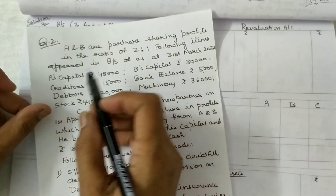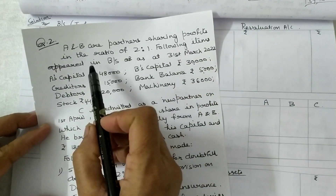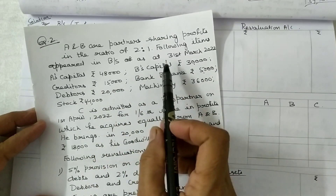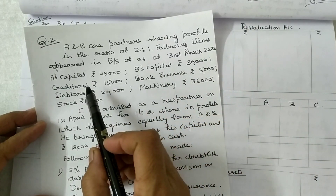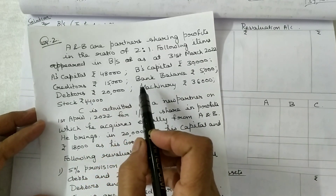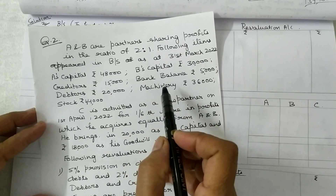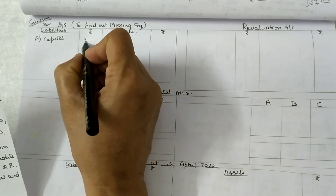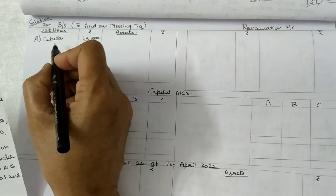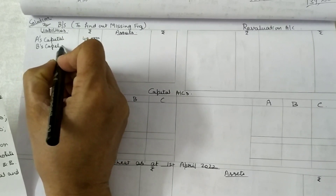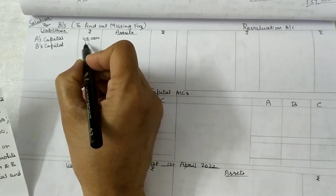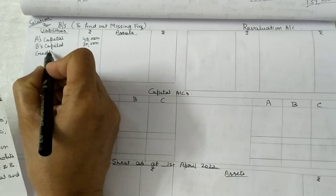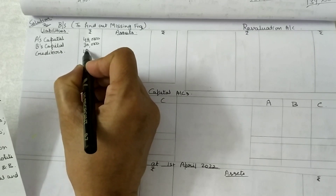The question: A and B are partners sharing profits in the ratio of 2 is to 1. The following items appeared in the balance sheet at 31st March 2022. Balance sheet is not given, so first you have to make the balance sheet from this and find out the missing figure of the profit and loss account. A's capital is 48,000, B's capital is 30,000, and creditors 15,000.